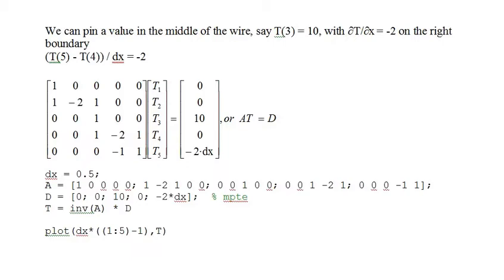In this example, we specify a Dirichlet boundary condition on the left boundary with T1 equals 0, and a Neumann boundary condition on the right boundary with the spatial derivative of temperature specified as minus 2. The equation for that is T5 minus T4 over dx equals minus 2. We also pin the temperature at the third grid point to be 10, changing the third linear equation to T3 equals 10. The matrix setup is shown in the middle of the page, and the code to create the matrices is at the bottom, along with the plot command.